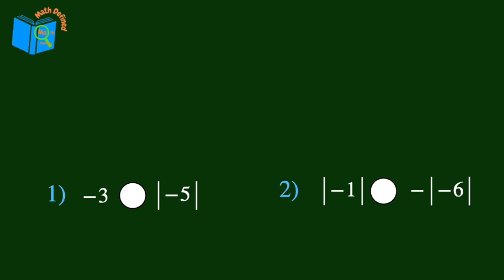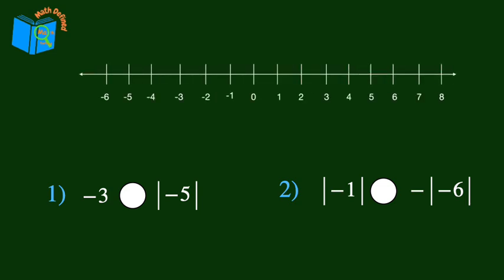Let's start with whole numbers and integers. Our first comparison is negative 3 and the absolute value of negative 5. Let's use a number line to visualize these two values. We'll graph negative 3 by placing a dot on the number line at negative 3. Then we'll graph the absolute value of negative 5, which is positive 5. We can visually see on the number line that the absolute value of negative 5 is to the right of negative 3, so negative 3 is less than the absolute value of negative 5.